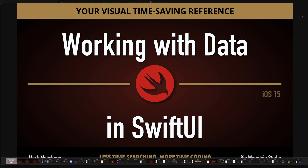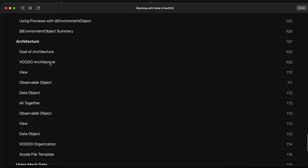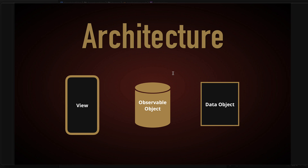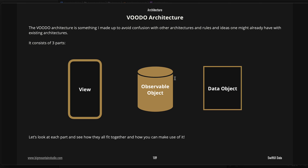I'm using an architecture from one of my books called 'Working with Data in SwiftUI.' It's called the Voodoo architecture — that stands for View, Observable Object, and Data Object: V-O-O-D-O, Voodoo. The goal is to simplify things. It's like MVVM but without strict rules. There are three parts: a view, an observable object, and data objects — and data objects are optional.